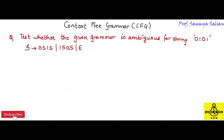Now let's take one example. Given a question: test whether a given grammar is ambiguous for the string 0101, with the production rules given here. As we know, a given grammar is ambiguous if I am able to construct two parse trees for a string.